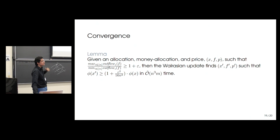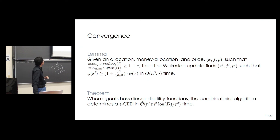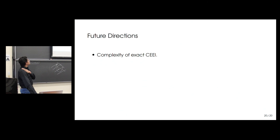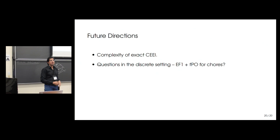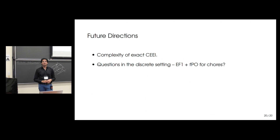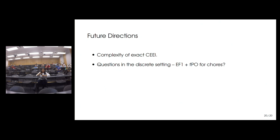The major future directions are: settling the complexity of finding the exact competitive equilibrium with equal incomes, and generalizing to obtain fair and efficient allocations in the discrete setting — one open problem is whether this analysis helps settle that. That's more or less what I wanted to cover.